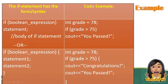For example: int grade is equal to 78. If grade is greater than 75 — the value of grade is 78, is 78 greater than 75? This is true. Therefore, it will display 'pass'. But for example, the grade is equal to 70 — is 70 greater than 75? No. So it will do nothing.